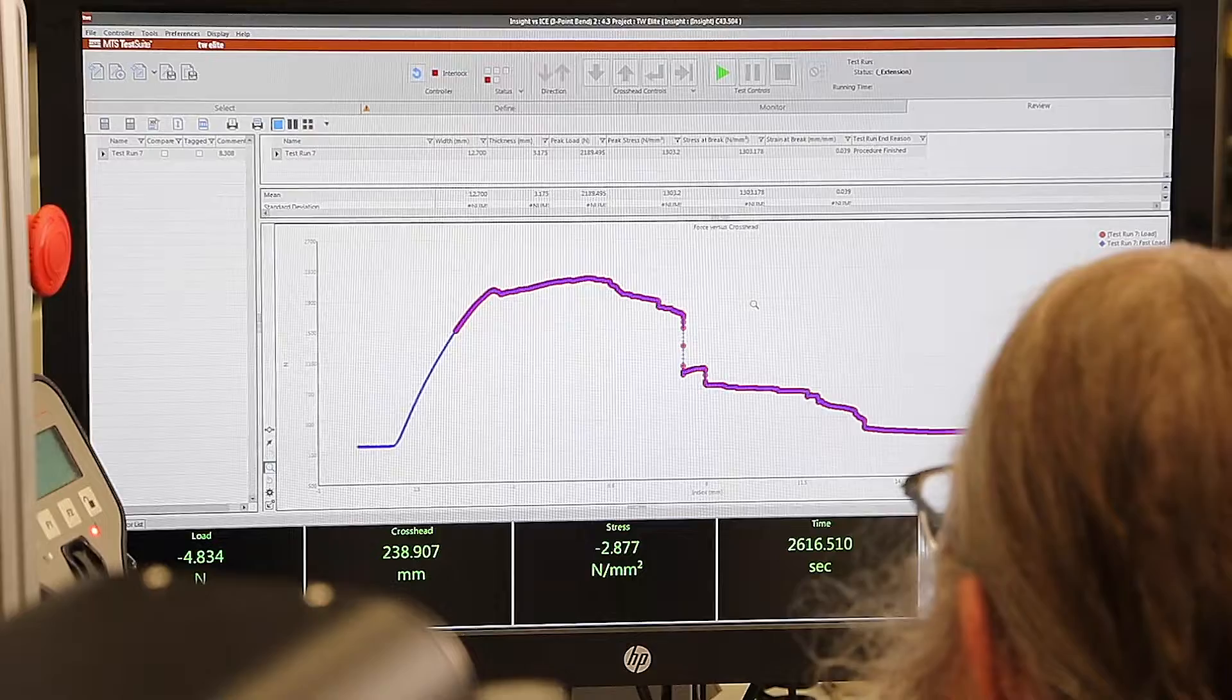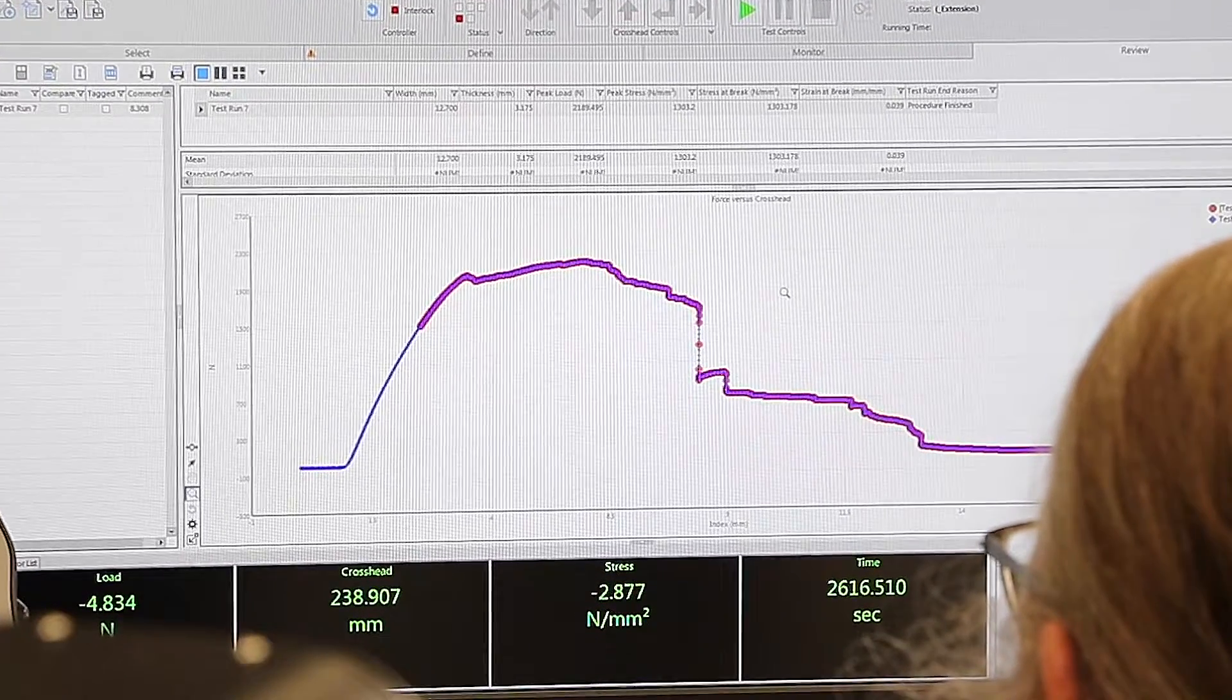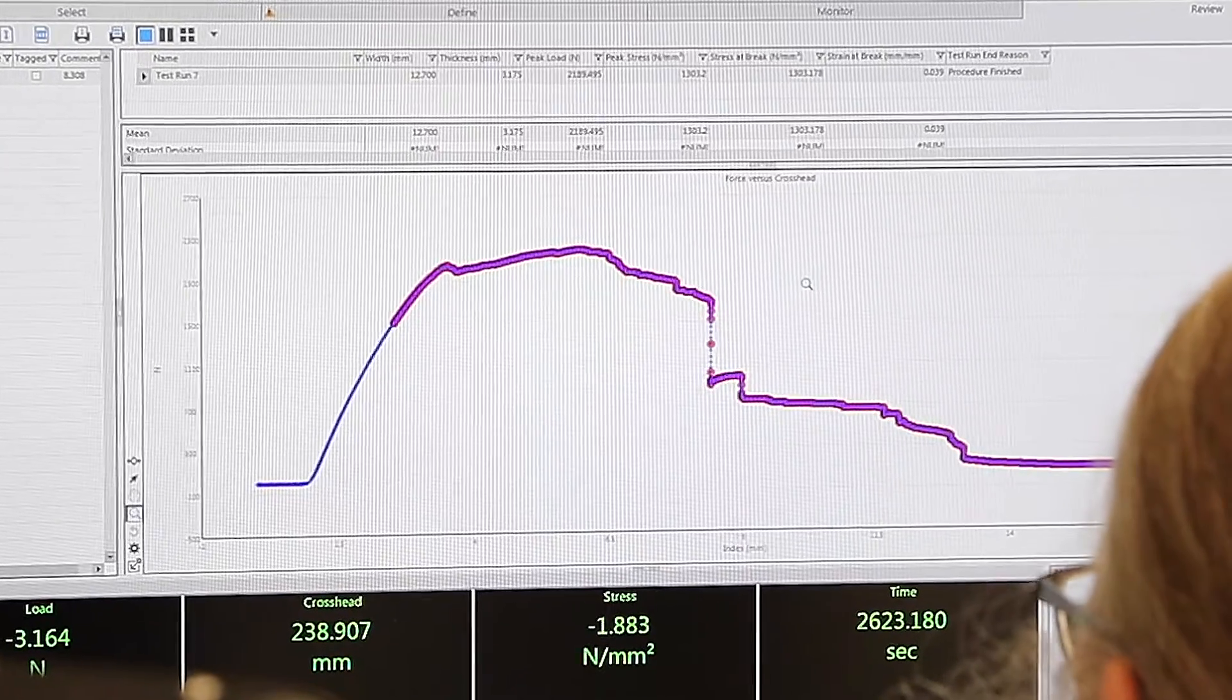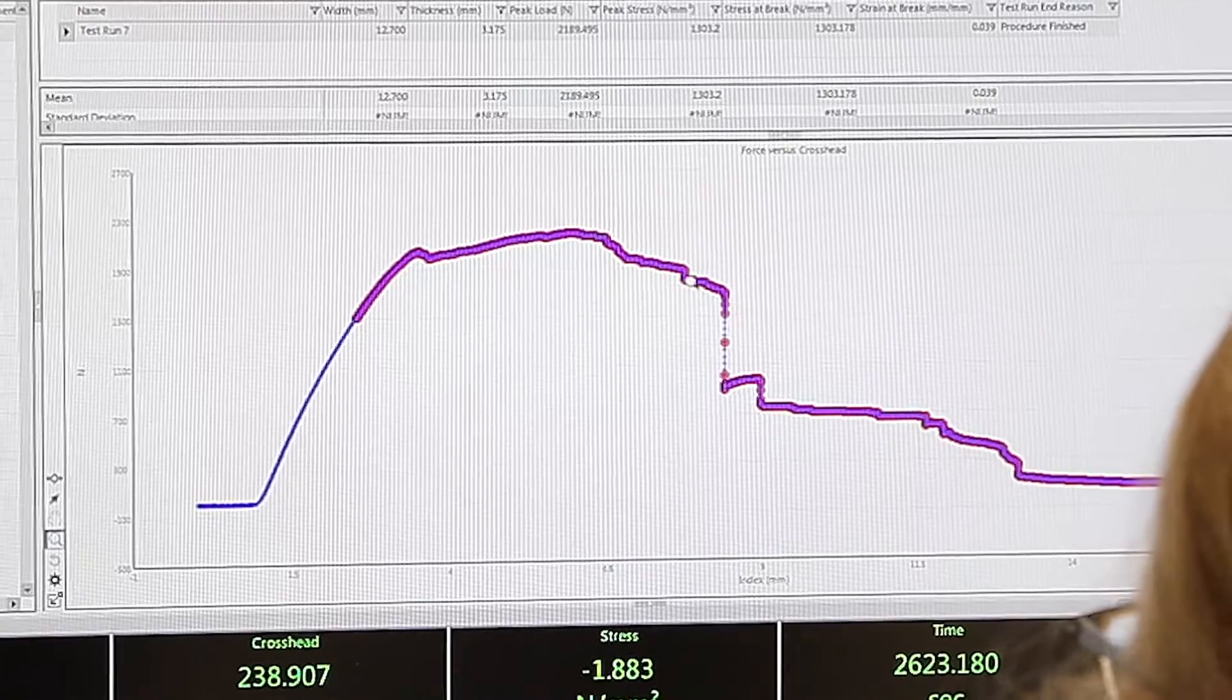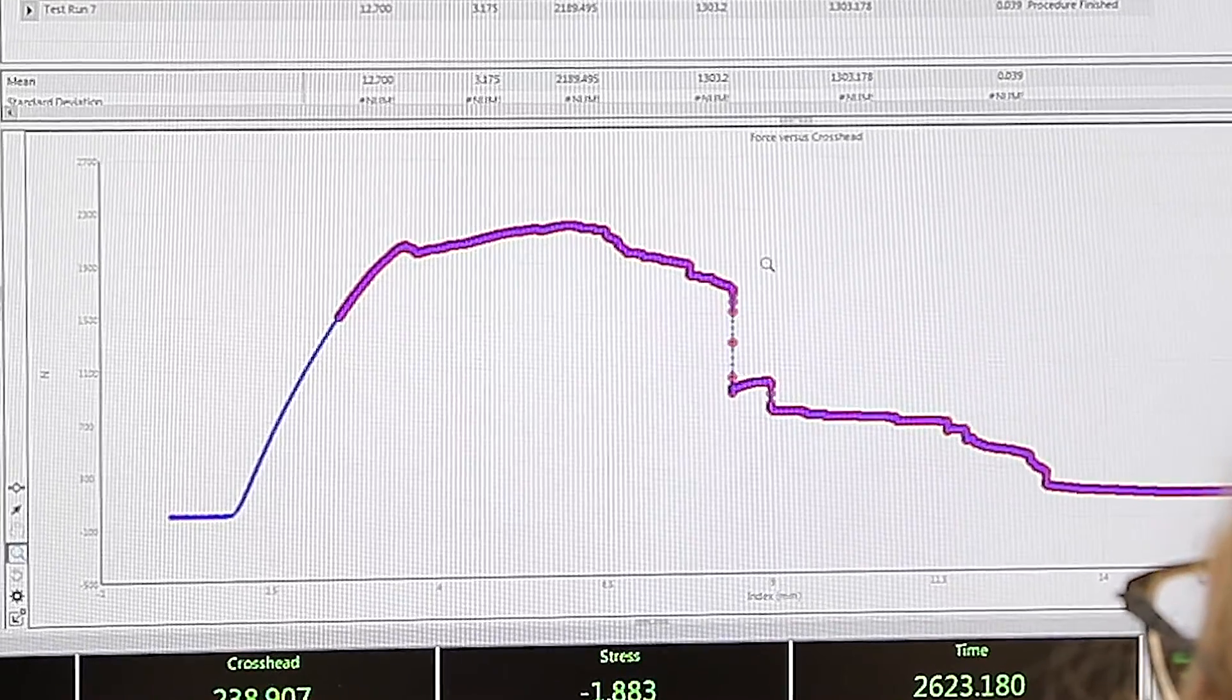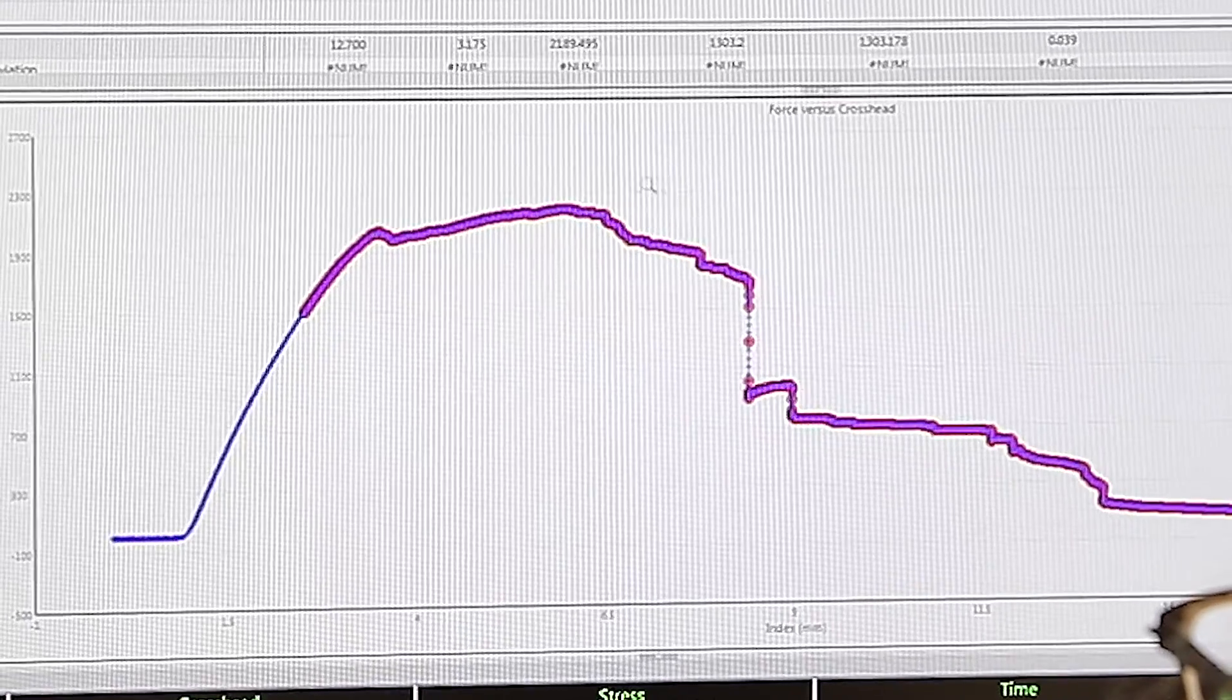This is an example of the data acquired during a simple three-point bend test on the plywood that we showed earlier. As we see, the data acquisition rate for the red follows the data acquisition rate for the blue. The red is the slower acquisition. The blue is the faster acquisition.